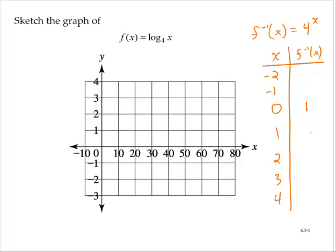4 to the 0 is 1, 4 to the 1st is 4, 4 to the 2nd is 16, 4 to the 3rd is 64, and 4 to the 4th is 256.